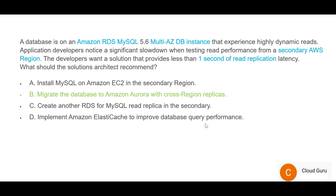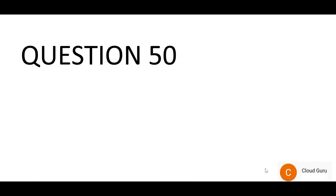Option D says to use ElastiCache to improve database query performance. ElastiCache would work if you have reports like Power BI running on the RDS instance and the report is running slow — then you can put an ElastiCache layer there. But the question has no requirement for running a report; hence D is also wrong. B is our final answer. We'll lock this answer and look at question 50, the last question for this part.